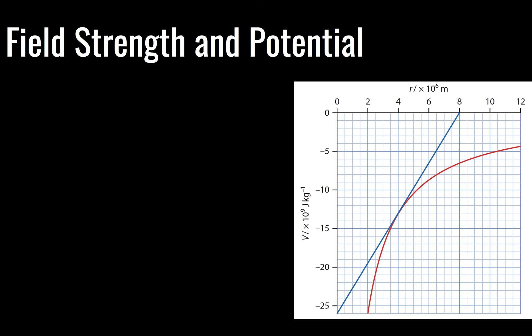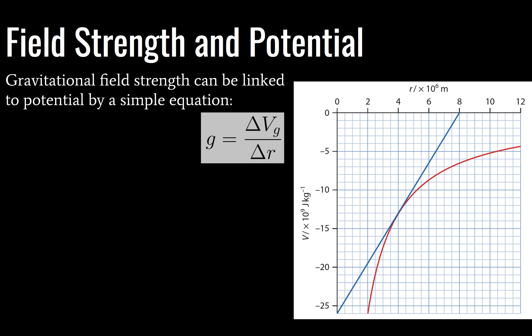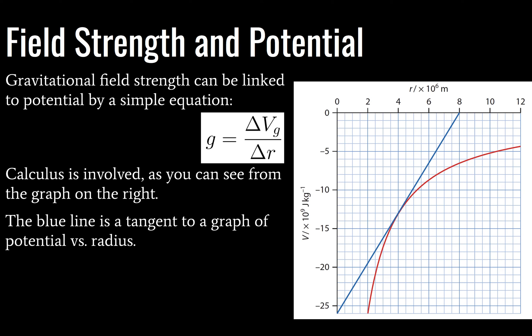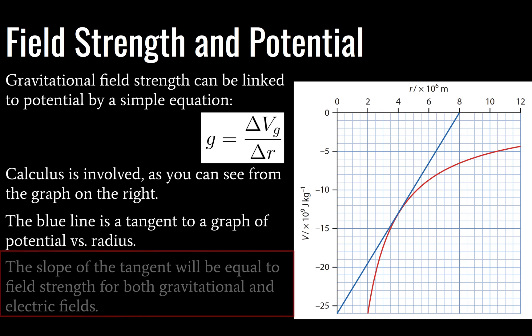We are going to take a look at field strength and potential here. Gravitational field strength is linked to potential by this equation, and this is in your data booklet both for gravity and for electric field strength. Obviously the potential is going to be electric potential and gravitational potential, but the formulation of the equation is the same. So whenever you have two things changing and what appears to be a function, you could probably guess that calculus is going to be involved, and that is the case here. So our blue line is a tangent to the graph of potential versus radius, and the slope of that tangent line will be equal to field strength for gravitational and electric fields.